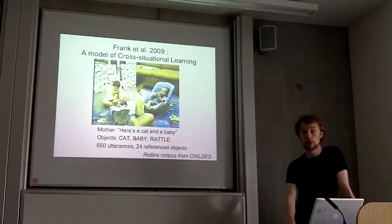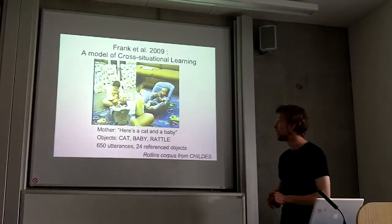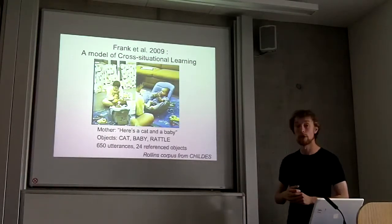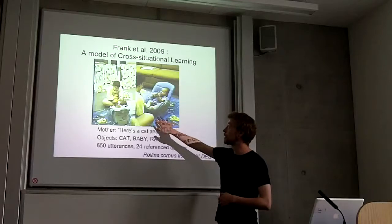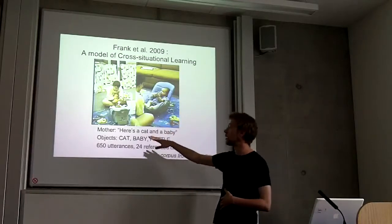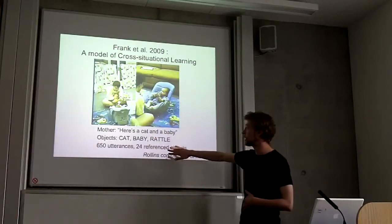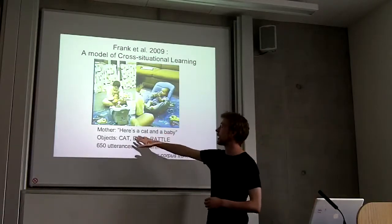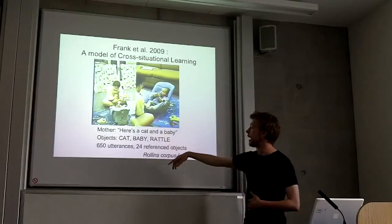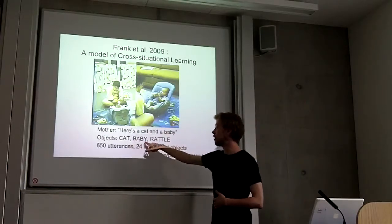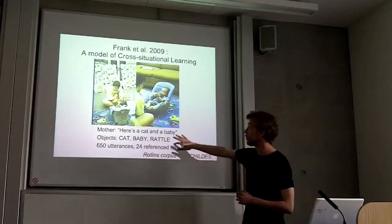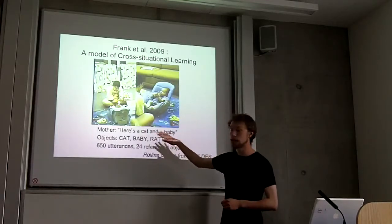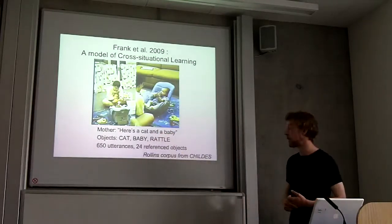I've been looking at this with the help of a model from Frank et al. This is a Bayesian model of cross-situational learning. What they did was they got a video corpus of child-parent interaction, and they coded it for utterances and the objects that were present in the scene. So in this case, the mother's saying 'here's a cat and a baby,' and the objects in the scene are a cat, a baby, and a rattle. Over several instances of these pairs, the model learns to associate certain words with particular objects.